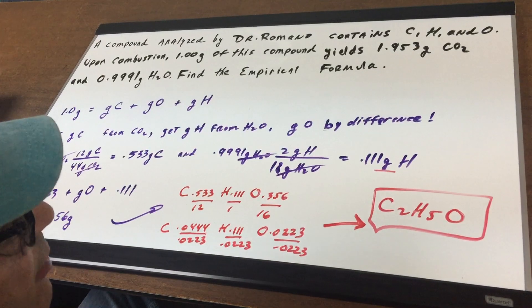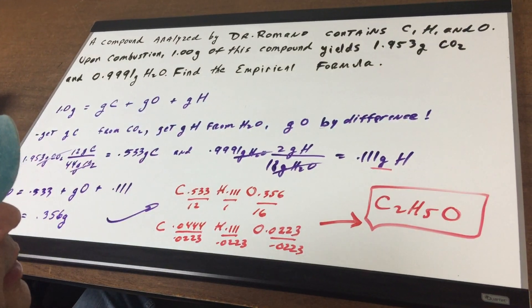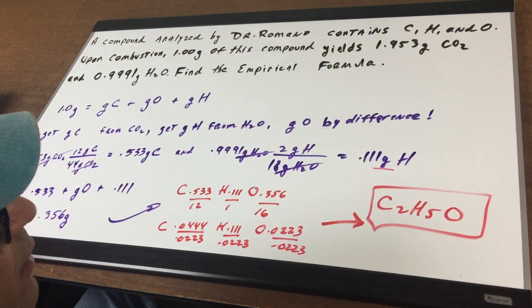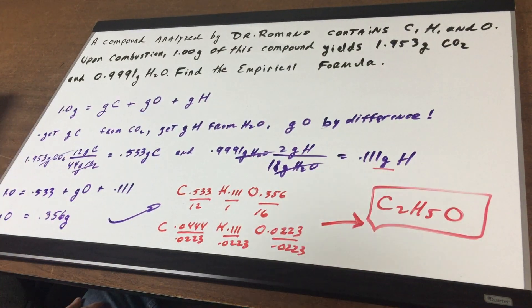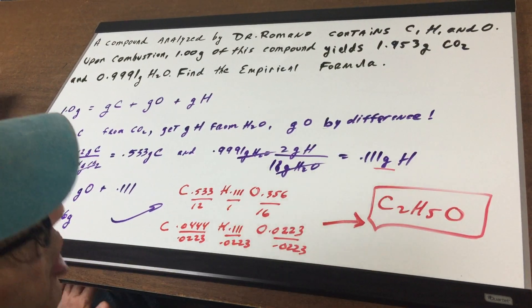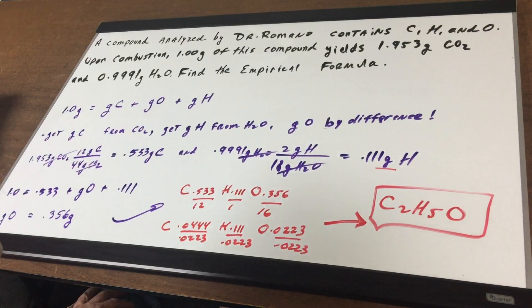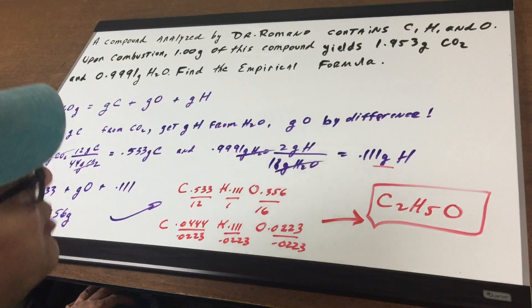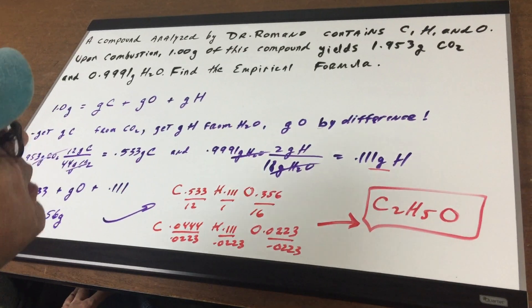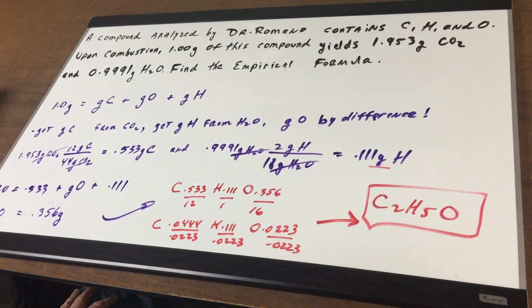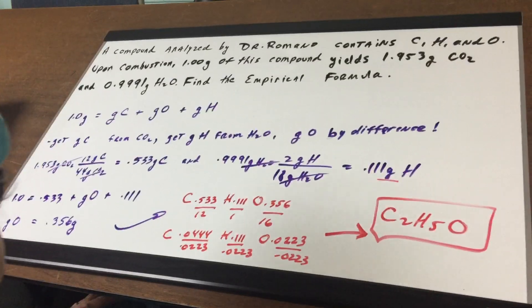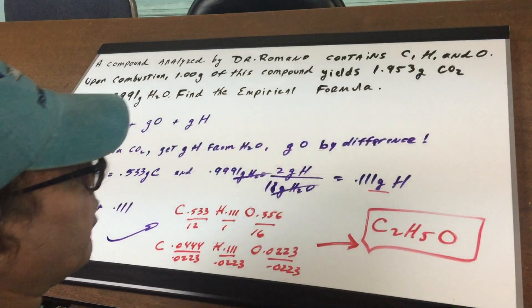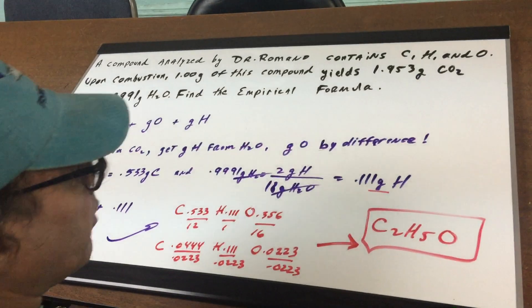And that would be the empirical formula C2H5O. I hope this gives you a good idea of how we use combustion analysis to find the empirical formula. Good day to you — bye-bye.